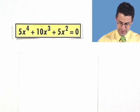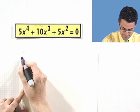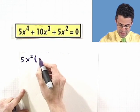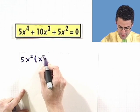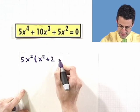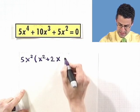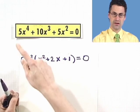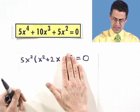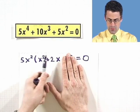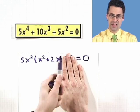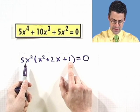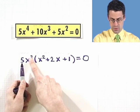If we factor out a 5x squared, what am I left with? I'm left with x squared plus 2x plus 1 equals zero. A classic mistake is to say, if I factor out a 5x squared there'll be nothing left from the last term. But if there's nothing left, when I distribute I won't get that term. I need that 1 there, because 5x squared times 1 gives me the 5x squared when I distribute.